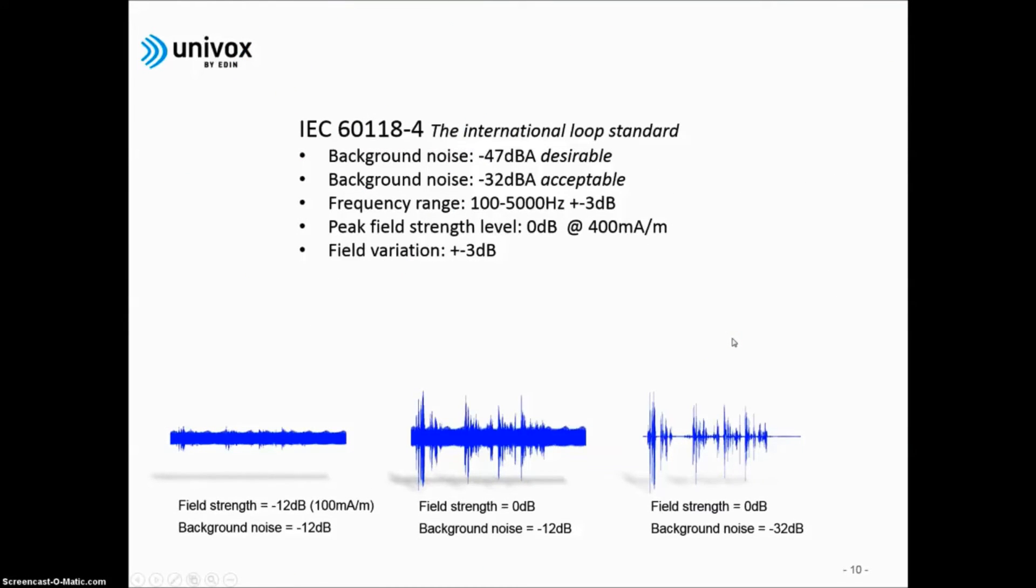There is an international standard for hearing loop system performance. Note that this standard refers to the performance of the installed system and not the hearing loop driver. The standard is called IEC 60118-4. In essence, it says that the magnetic background noise should preferably be below minus 47 dBA, but minus 32 dBA is accepted. The frequency range is defined from 100 Hz to 5 kHz. The peak field strength, the 0 dB reference, is 400 mA per meter. The field strength variation must be kept within plus minus 3 dB. The old standard specified an average field strength at 100 mA per meter. The average is still about 100 mA per meter, but it is in the peaks that you find the intelligibility in speech, the defining sounds.